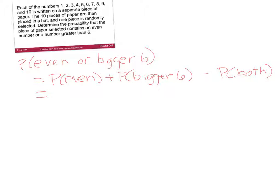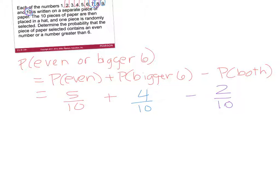Looking at numbers 1 through 10, the even numbers are 2, 4, 6, 8, and 10 — so 5 out of 10 numbers are even. The numbers larger than 6 are 7, 8, 9, and 10 — so 4 out of 10 are larger than 6. Then we need the probability of both: numbers that are even and larger than 6, which are 8 and 10, giving us 2 out of 10.